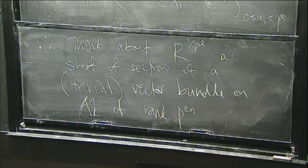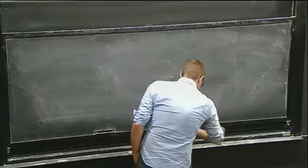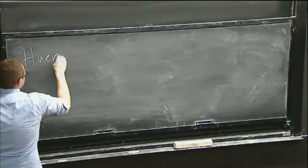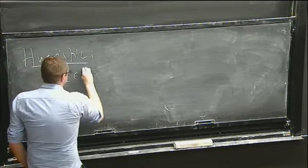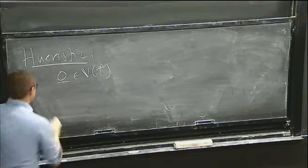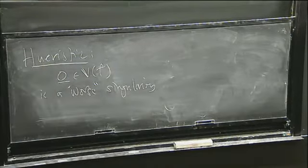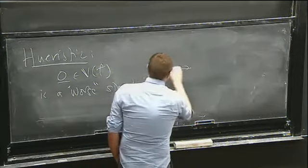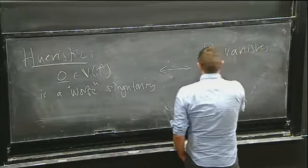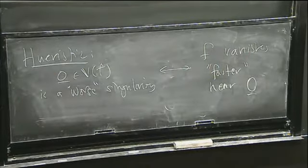Now we want to use this to analyze the local geometry of the zero set of f at the origin. The idea here is that 0 in the vanishing set of f is a worse singularity if and only if f vanishes faster near the origin.